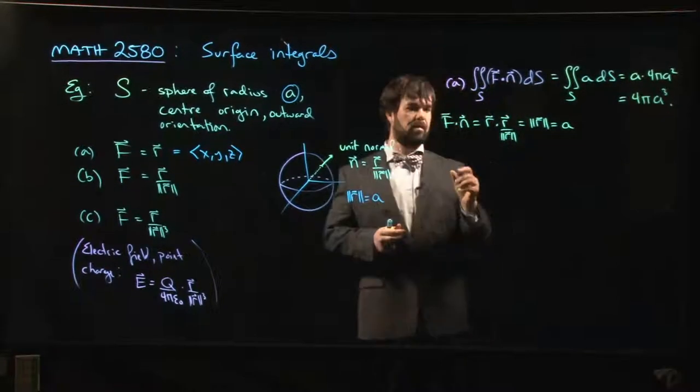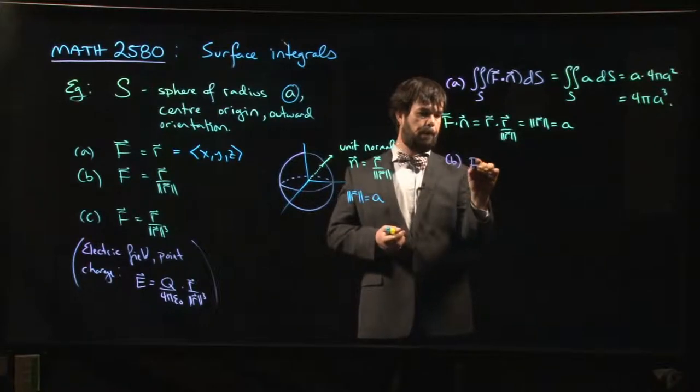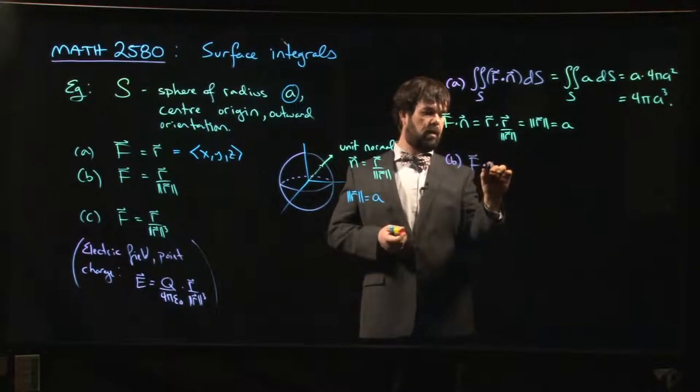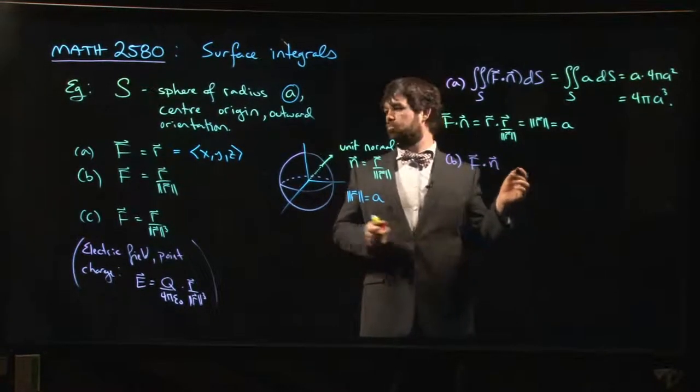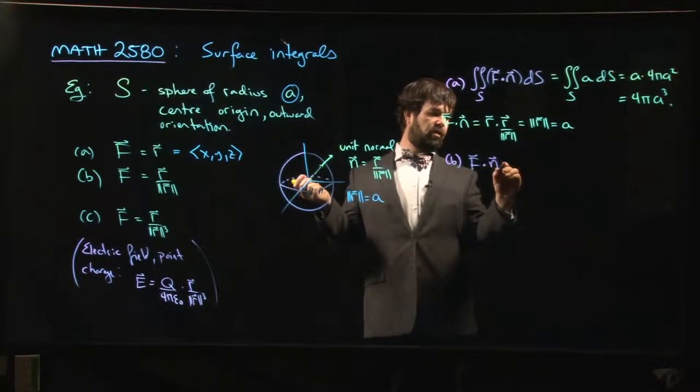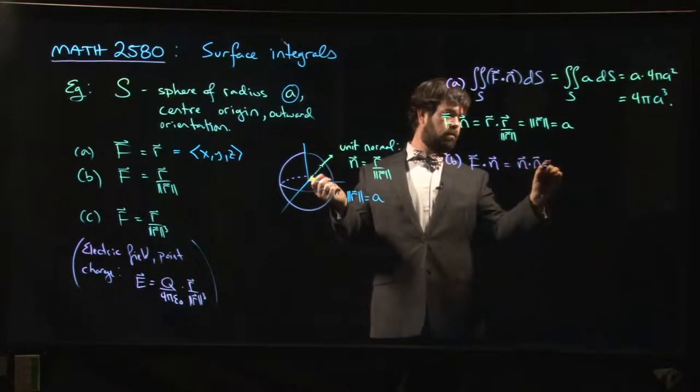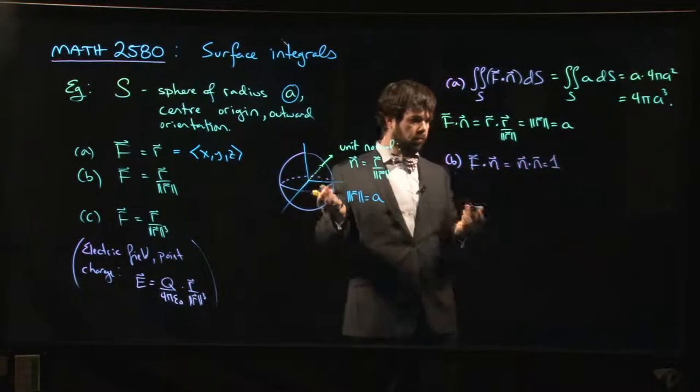If we were doing part B, same idea. Now f dot n—well, f is itself the unit vector, so this is the unit normal dotted with itself. It's n dot n, which equals 1.